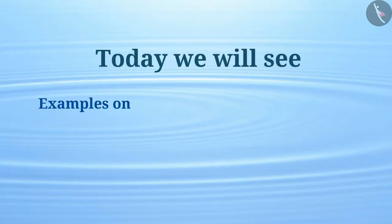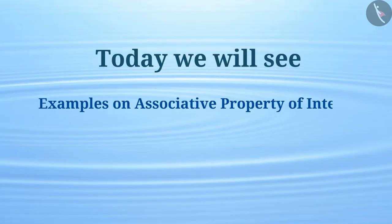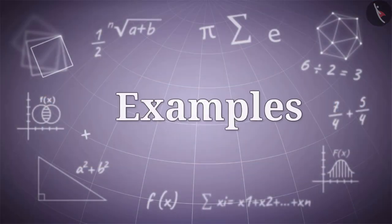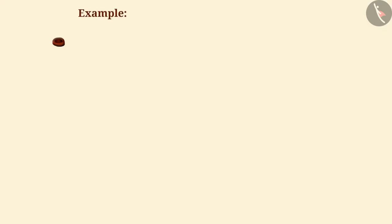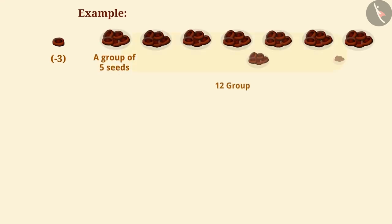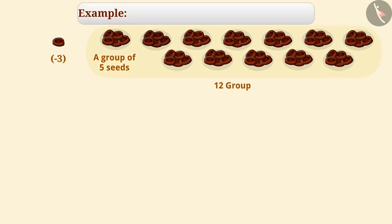Today we will see examples on the associative property of integers. Let's consider the value of each tamarind seed as minus 3. If we make 12 groups of 5 seeds each, then what is the total value of the seeds? Here, 12 groups of 5 seeds each are formed.